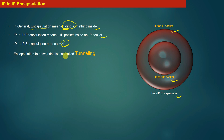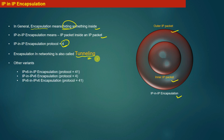Encapsulation in networking is also called tunneling. Other variants of tunneling include: IPv6 in IP encapsulation with protocol value 41, IP in IPv6 encapsulation with protocol value 4, and IPv6 in IPv6 encapsulation with protocol value 41.